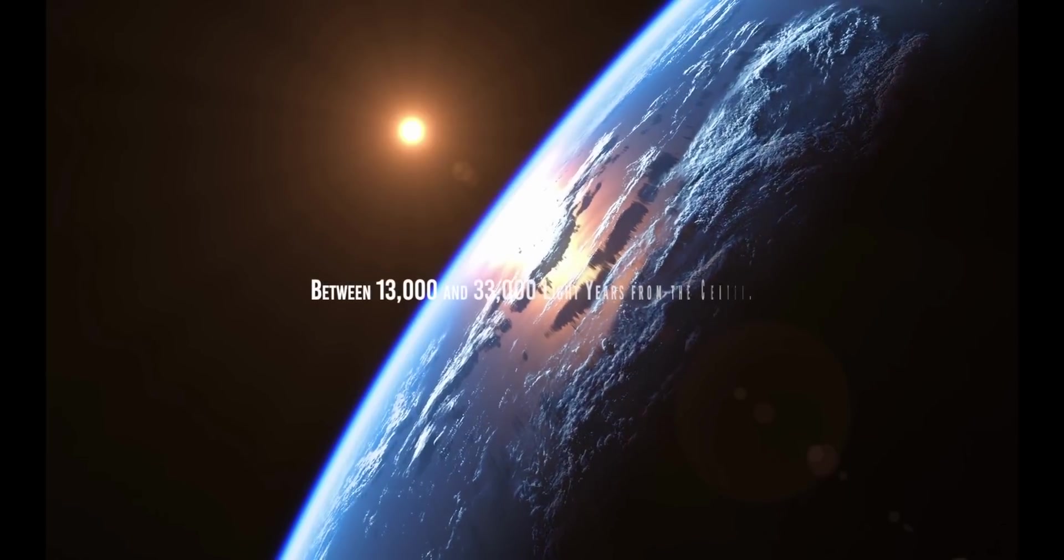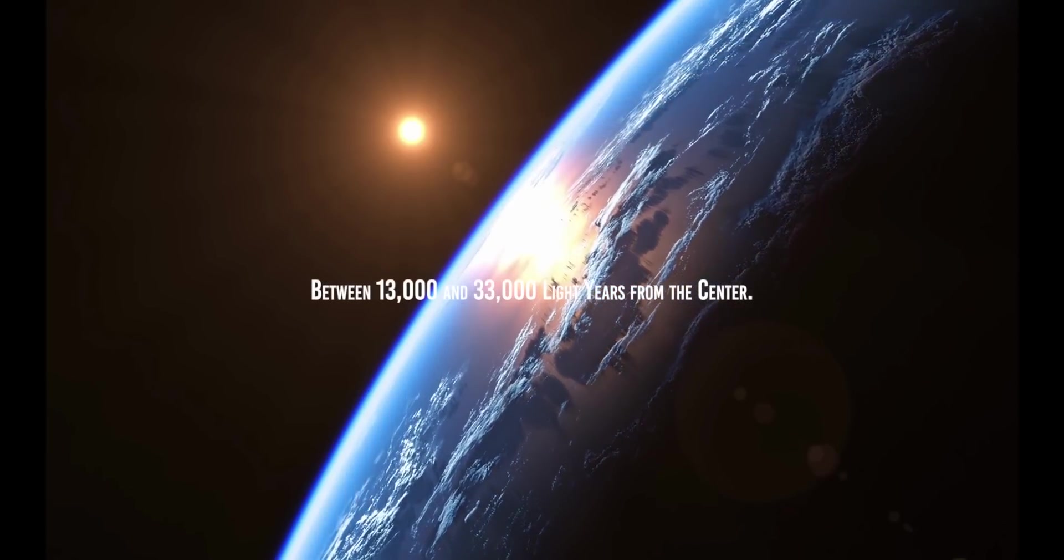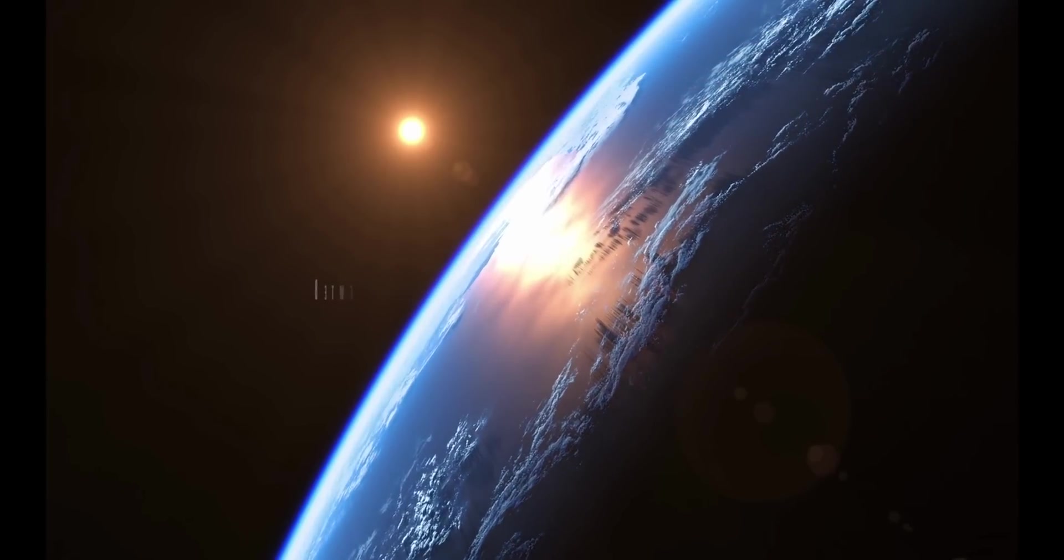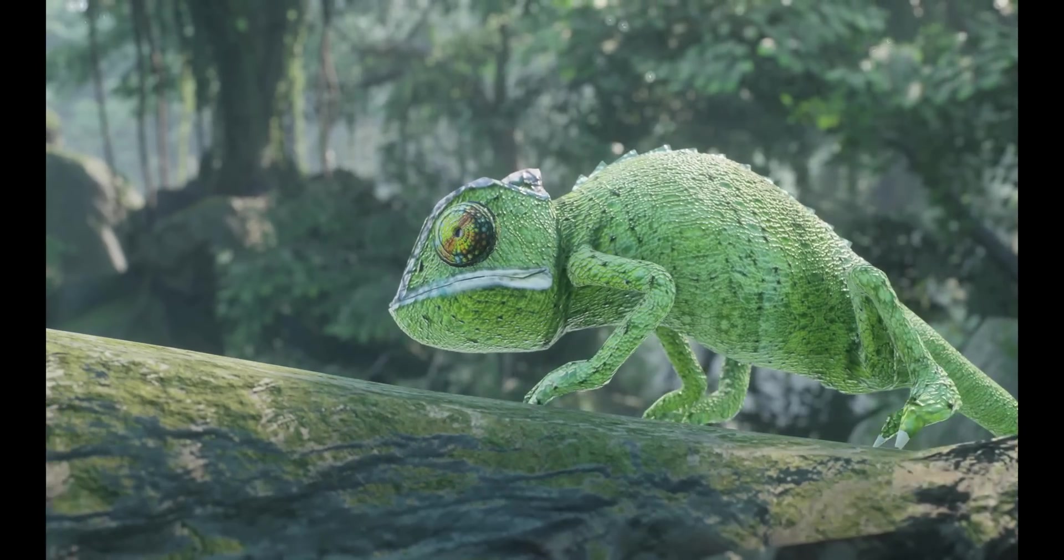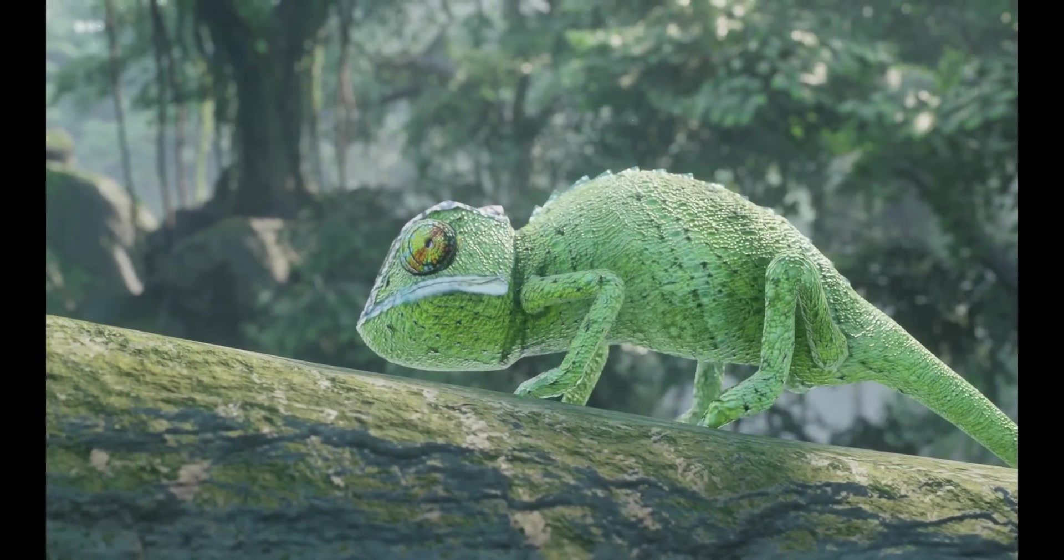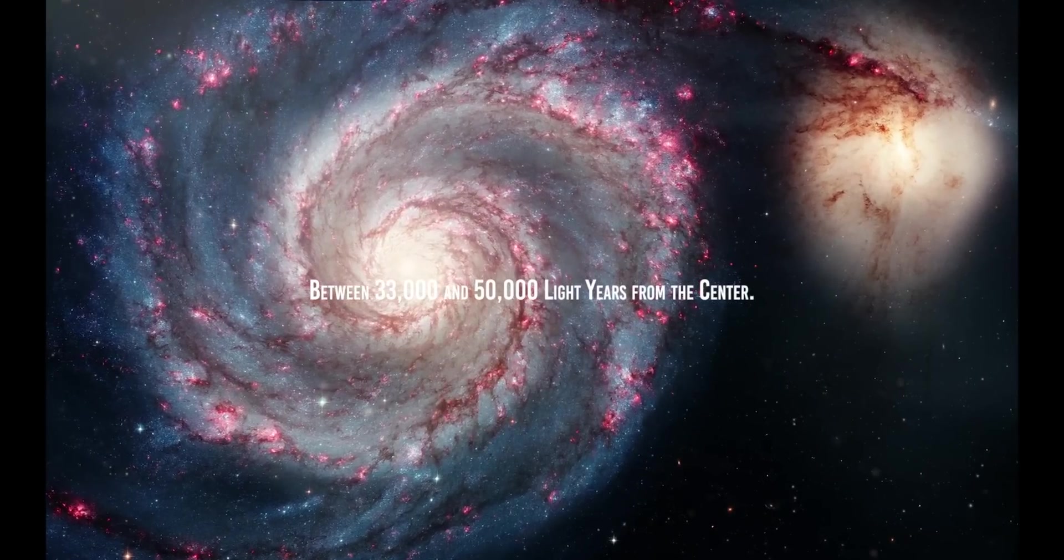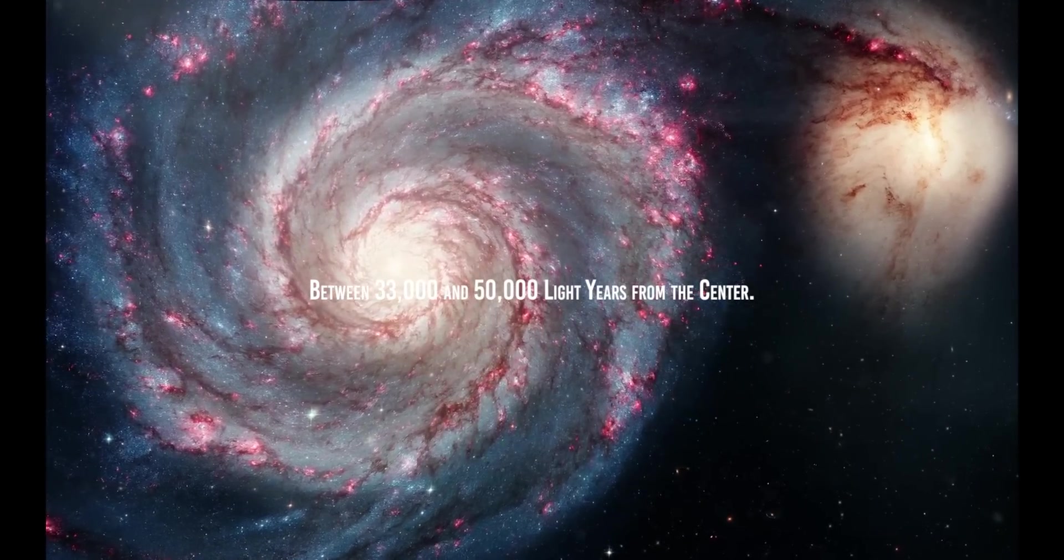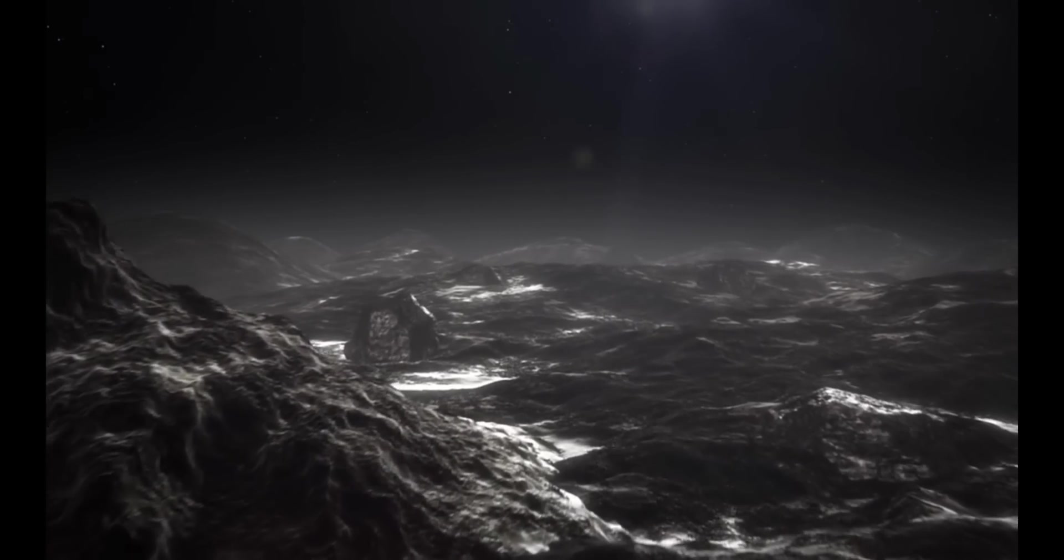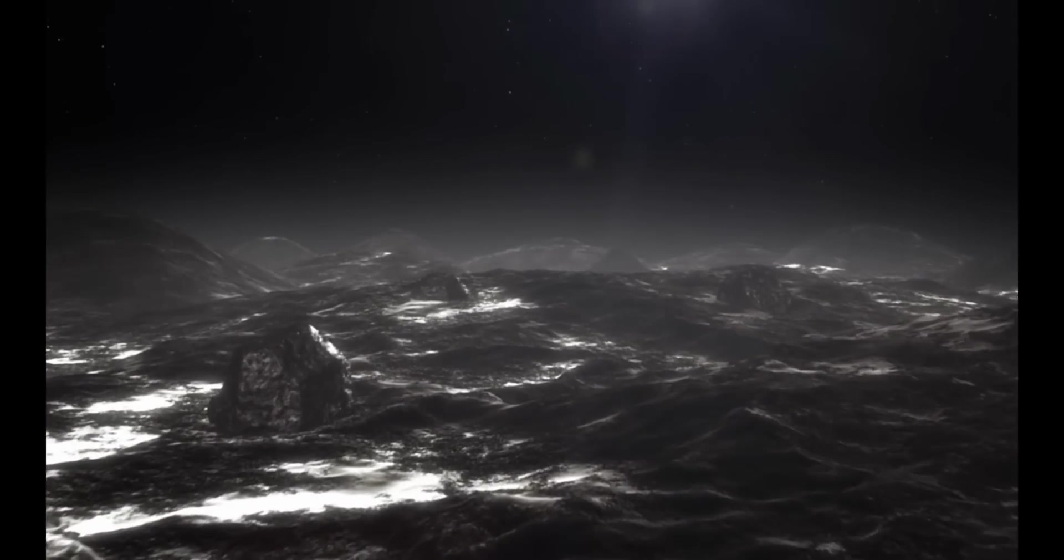Between 13,000 and 33,000 light-years from the center, this is the habitable zone by definition. Planets have had sufficient heavy elements to form and initiate a biological cycle, as well as a stable and safe environment that allows life to thrive for a long time. Between 33,000 and 50,000 light-years from the center, this region is rich in hydrogen and helium, while there is a very low ratio of heavy elements. Hardly any planets within it will be rocky and therefore suitable for harboring life.